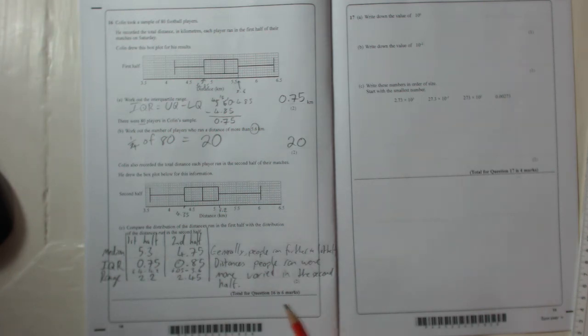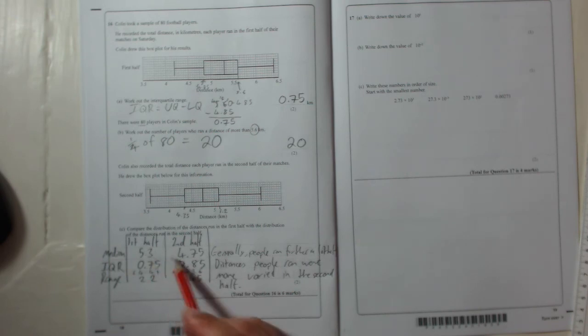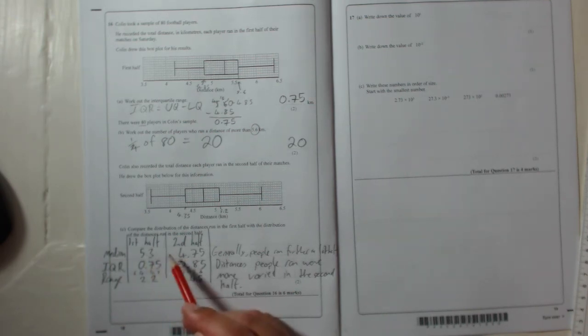But that's all you need to do. Remember, so it's one, say something about the median. So we said first half 5.3, second half 4.75, and then choose one of these only. You don't need to do both, interquartile range and the range. And then only one of those things you have to do a real life comment on. I think it's generally easier to comment on the median because all you've got to do is whichever is higher, just say well they ran further in that half. And that's all you've got to do.